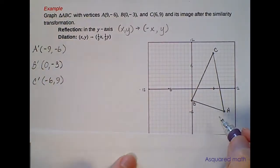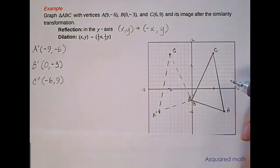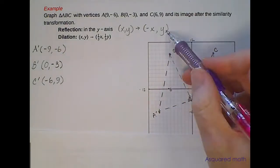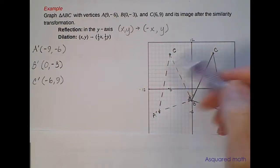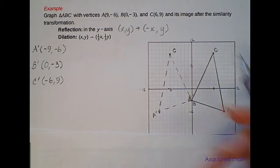So if we were to plot these points we would get the following triangle. We'd have this triangle which I'm going to draw as a dashed line because that's the intermediate that's in between our original image and our final image but this would be the image reflected over the y-axis.